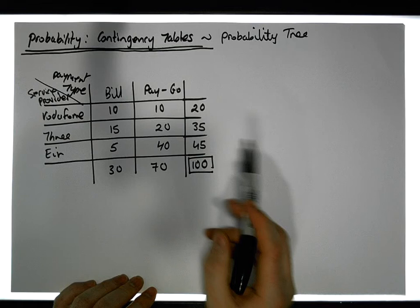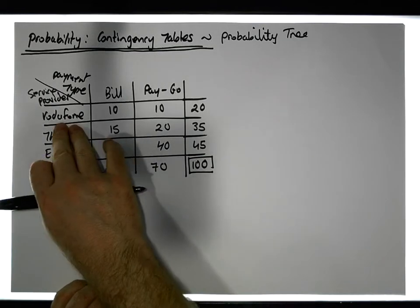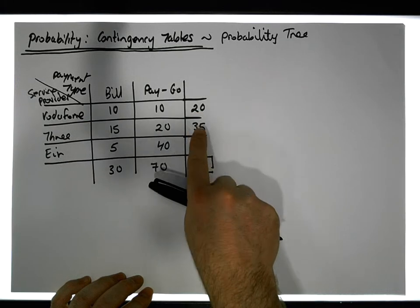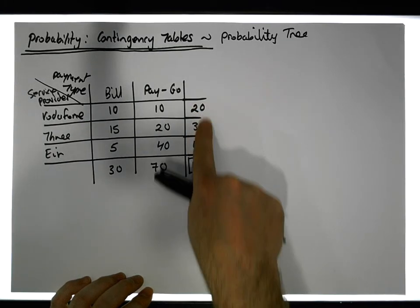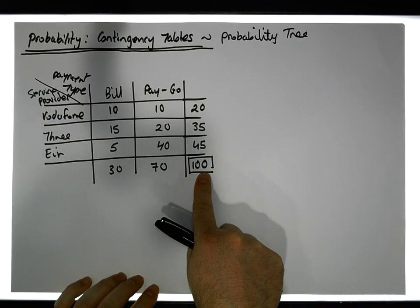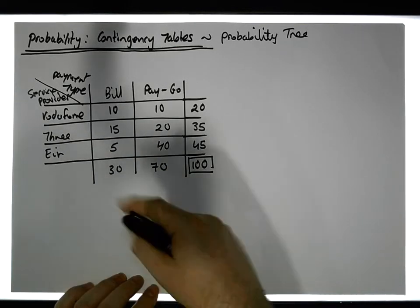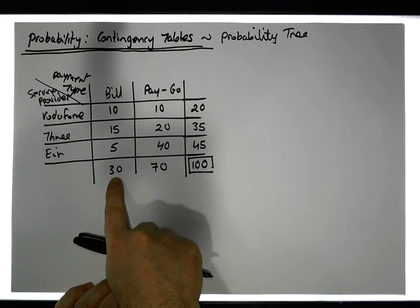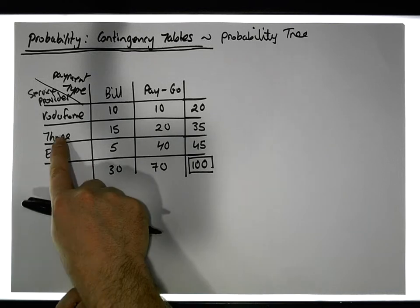The important thing here is marginal probabilities — the probabilities of simple events. For example, the probability that you're a Vodafone customer is a simple probability, calculated from the marginal totals relative to the total. So you can calculate things like: what's the probability that you're a bill pay customer? Well, there are 30 chances out of 100.